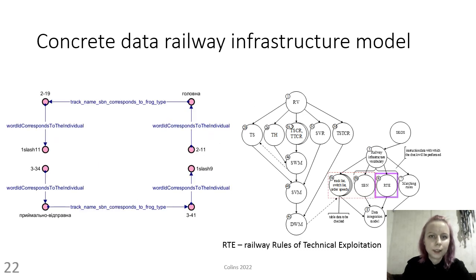In OpenRefine, the second part of a concrete railway infrastructure model is generated based on the annotations of the normative documents. The ontology of the railway technical exploitation rules of a concrete railway infrastructure model that includes data is presented in the diagram of the procedure for forming a modular railway infrastructure ontology.